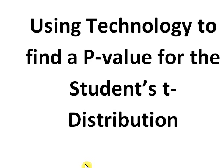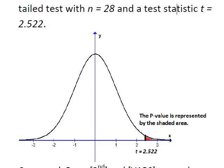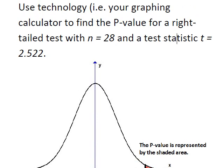We can figure out how to use technology to find the p-value. Here's an example. Let's use technology, by that we mean our graphing calculator, to find the p-value for a right-tailed test. In this case, the sample size is n = 28, and the test statistic is t = 2.522. So we're using the student's t-distribution, sample size is 28, test statistic is 2.522.